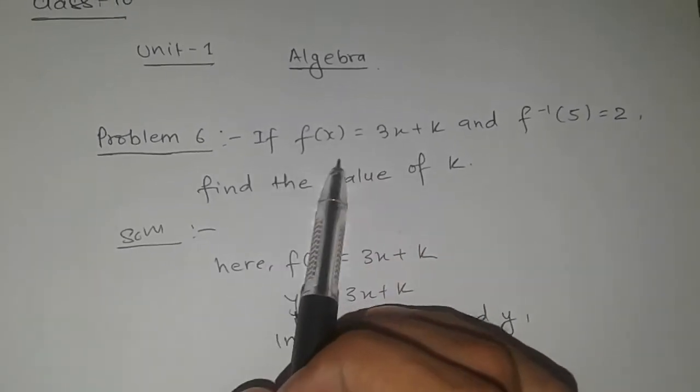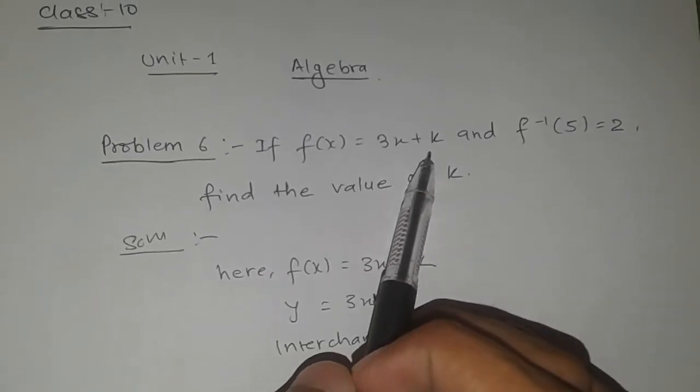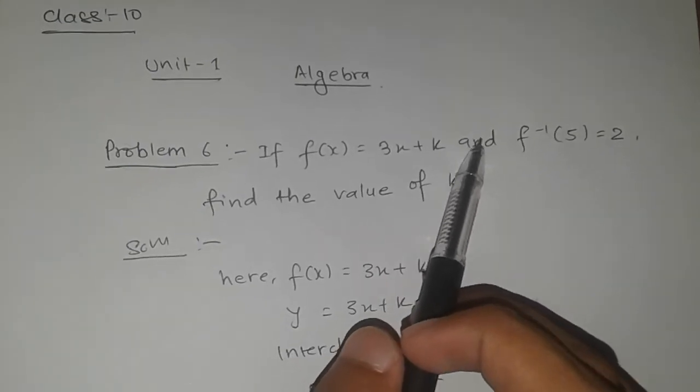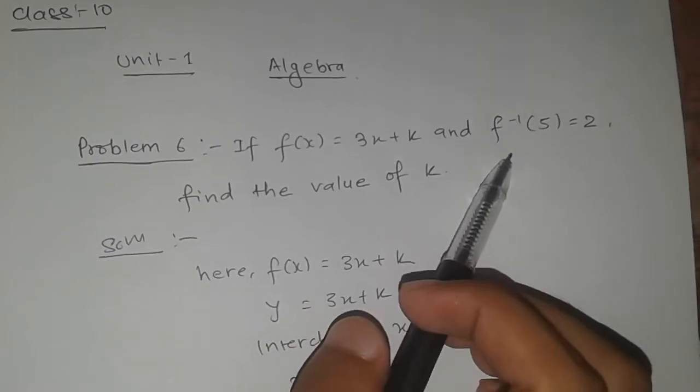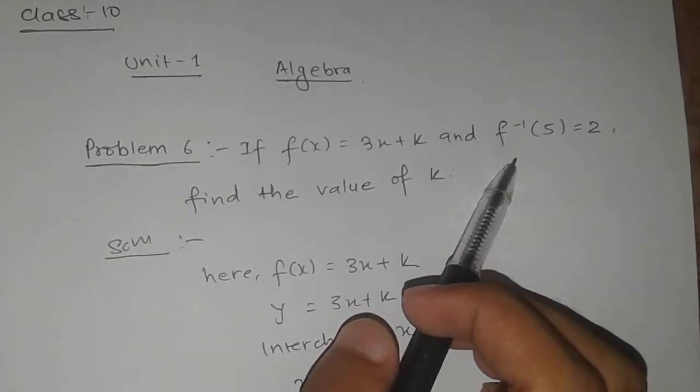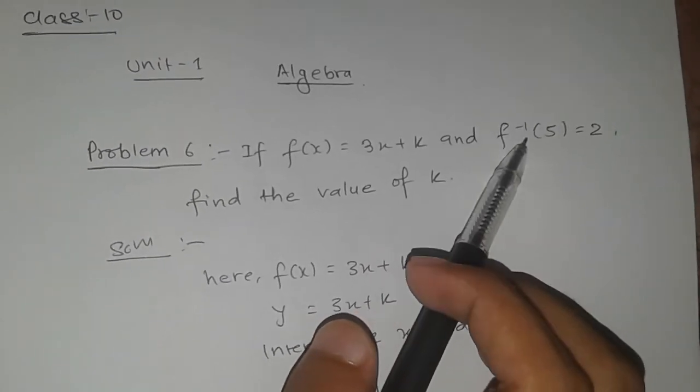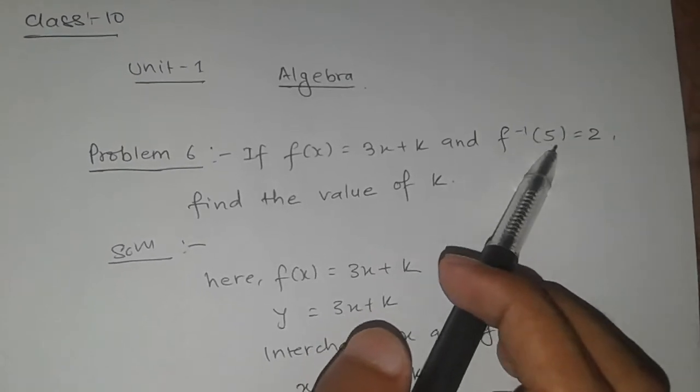Now we have the question: If f(x) equals 3x plus k, and f inverse of 5 equals 2, find the value of k. We need to find what k is, given that f inverse of 5 is 2.